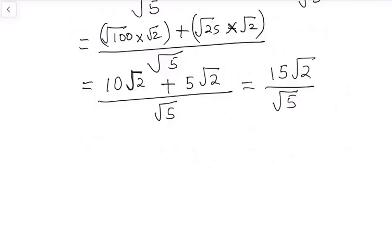How do we rationalize in this case? Rationalize, because we cannot leave our final answer with the square root of 5 as the denominator. We have 15 root 2 over square root of 5, multiply by root 5 and multiply by root 5.